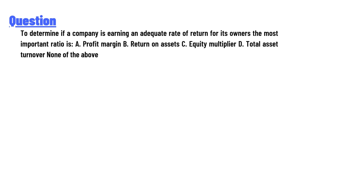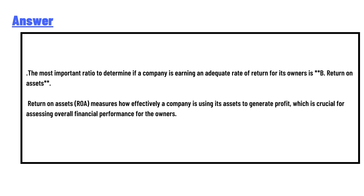To determine if a company is earning an adequate rate of return for its owners, the most important ratio is: profit margin, return on assets, equity multiplier, total asset turnover, or none of the above?